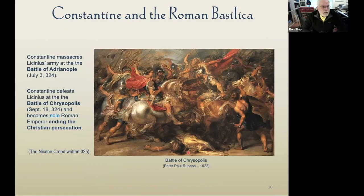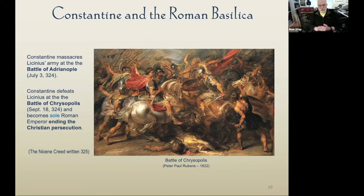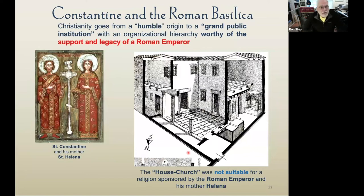Constantine and Licinius's armies met. Constantine massacred Licinius at the Battle of Adrianople on July 3rd, 324. Later that year in September, at the Battle of Chrysopolis, he finished off the army, and Constantine became the sole Roman emperor for both East and West. Christianity then went from a humble origin to a grand public institution with an organizational hierarchy worthy of the support and legacy of a Roman emperor.